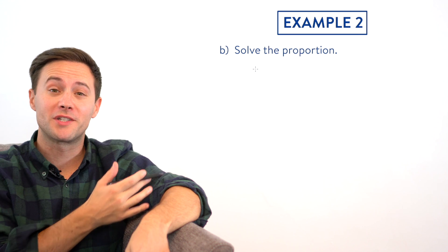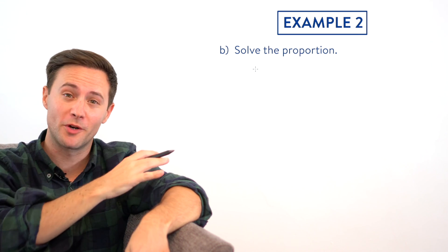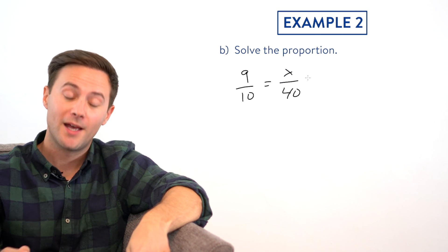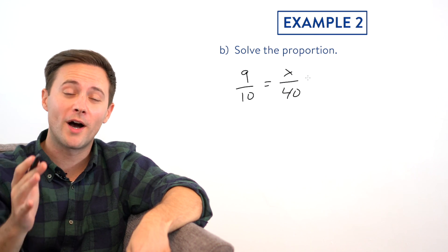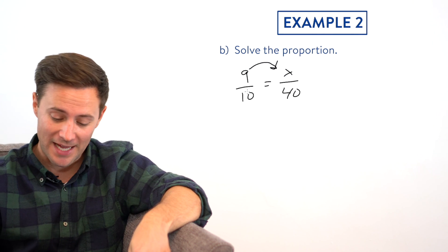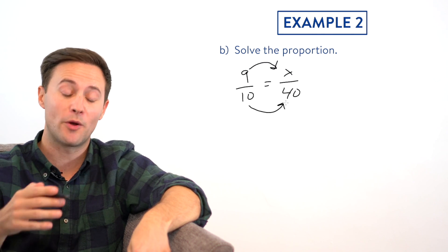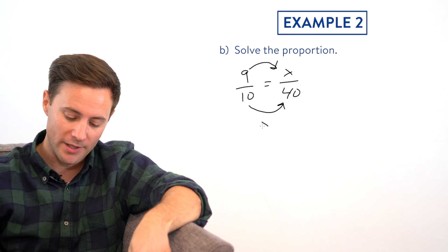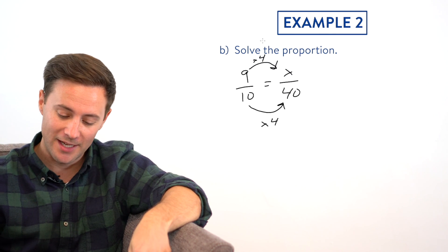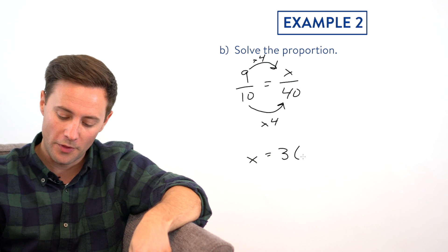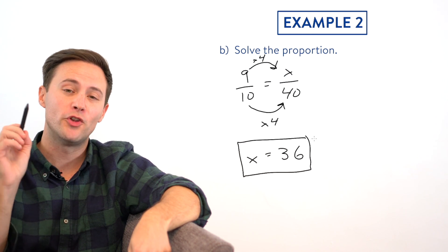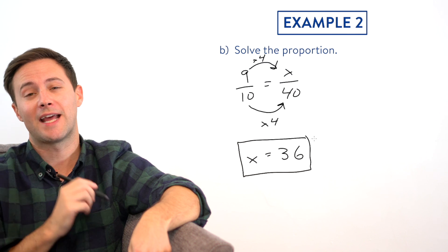Let's try B. Solve the proportion. So we had 9 tenths is equal to x over 40. We're going to solve the exact same way we did in example one. Just using mental math. I need to figure out what x is. So I'm going to say, well, how do I get from 10 to 40? Pretty simple, times four. So I do the exact same thing to the numerator. Nine times four is going to give us 36. So x is equal to 36, which means if the test is out of 40 points, you need to score at least a 36 to get 90% or above.